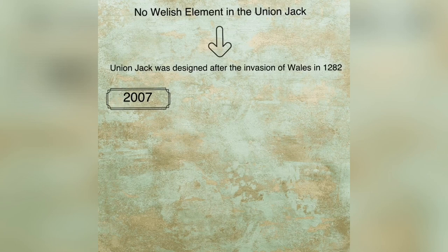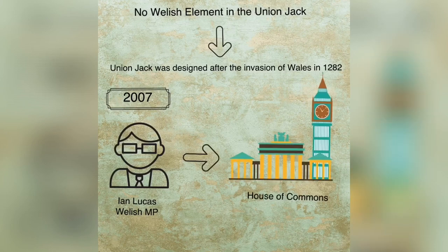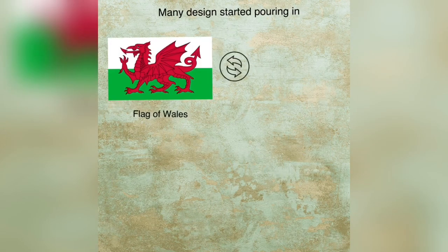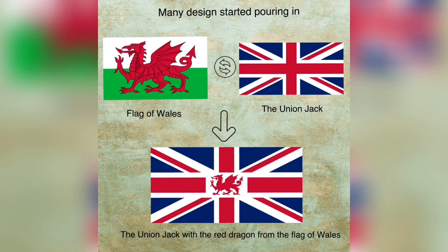So in 2007, the Welsh Member of Parliament Ian Lucas came up with the issue in the House of Commons, and the same was considered a valid point by the then Minister Margaret Hodge. After this discussion, many designs started pouring in from the public — one such was a Union Jack with a red dragon from the flag of Wales in the middle. However, no further decision was taken in this regard.